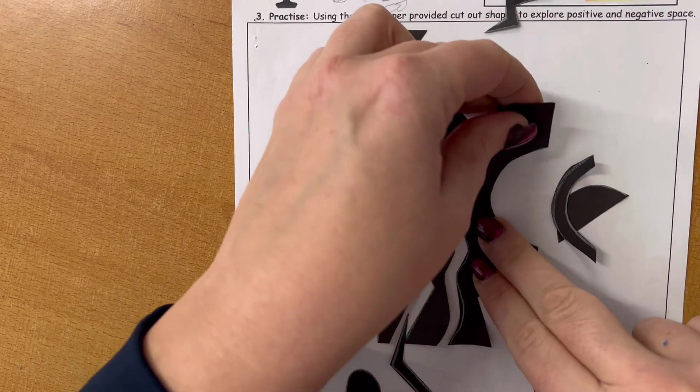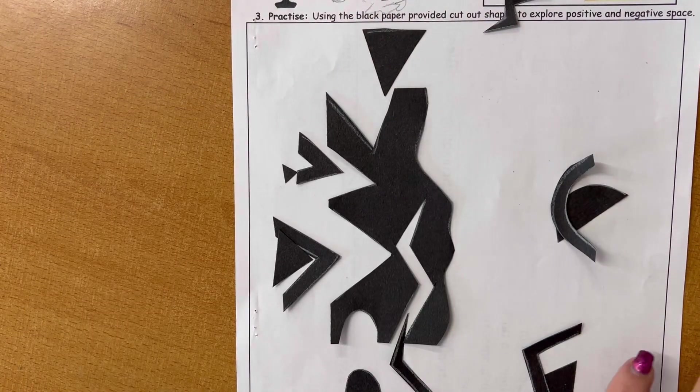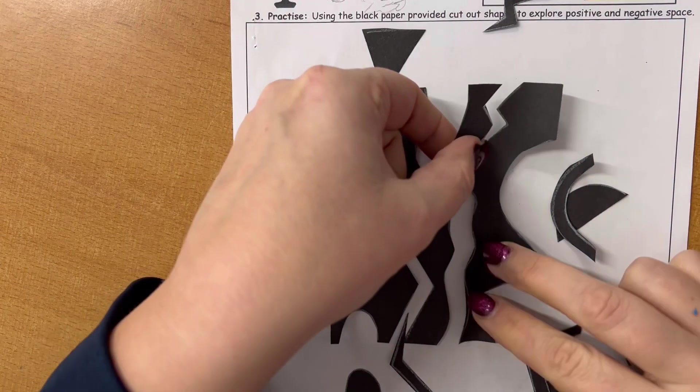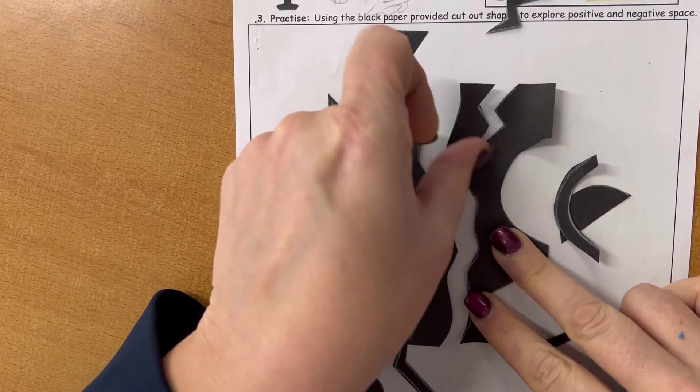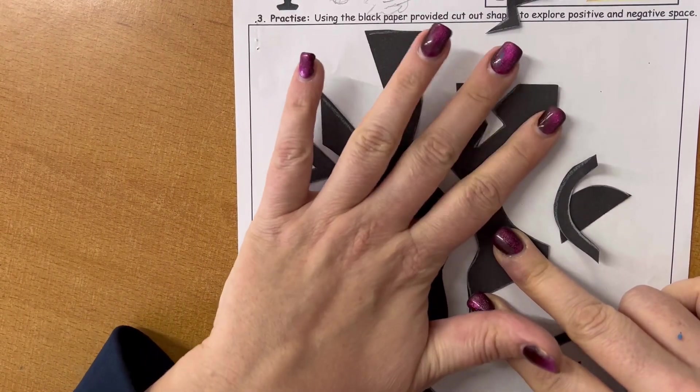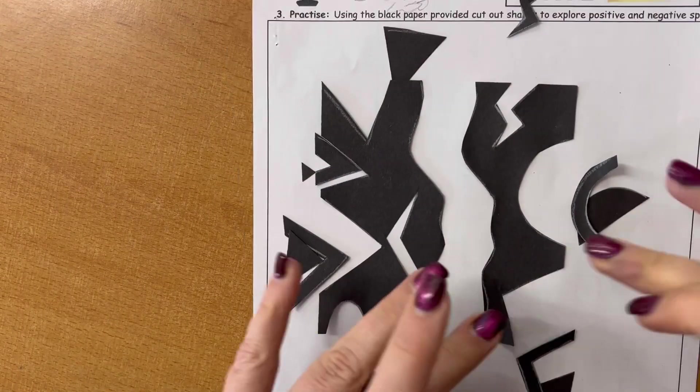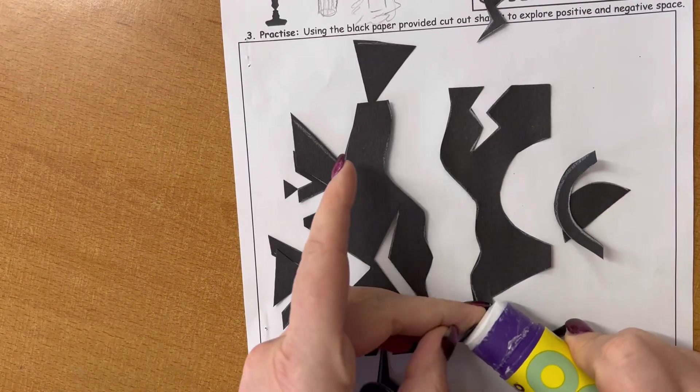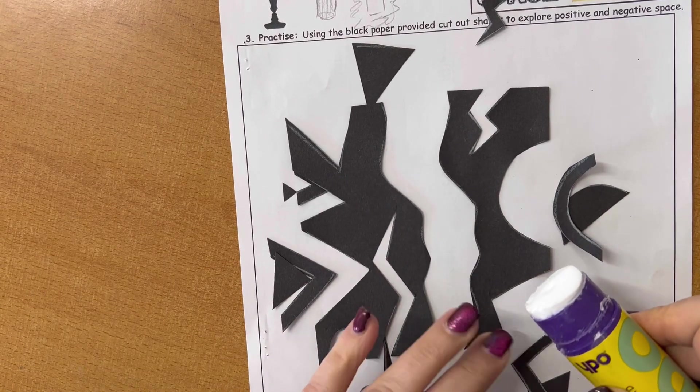So first of all, I'm going to stick on the bigger shapes. So that's my first shape. So I'm going to make sure I've put quite a lot of glue on that, just to stick it down really well.